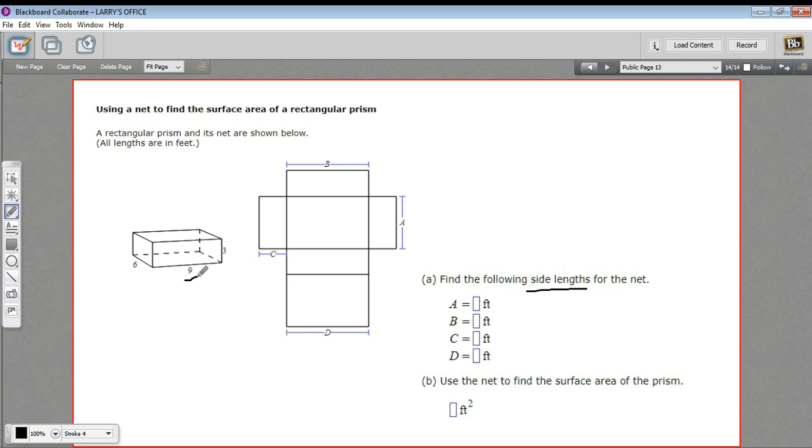You can read the lengths here off of the picture of the prism. It's got the longest side of nine and a medium-sized side of six and a short side of three. Now we just need to translate these onto the net.